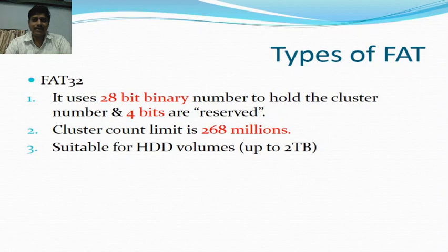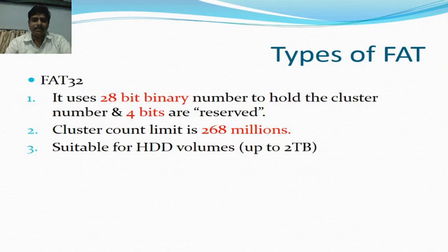The third type of FAT is FAT32. It uses a 28-bit binary number to hold the cluster number, and 4 bits are reserved. The cluster count limit is 268 million. It is suitable for hard disk drive volumes up to 2 TB.